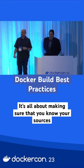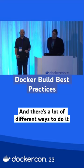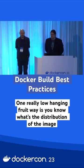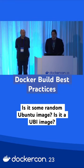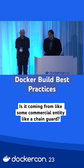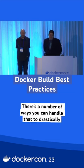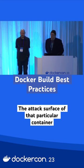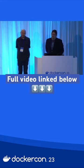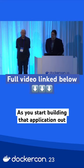It's all about making sure that you know your sources. There's a lot of different ways to do it. One really low-hanging fruit way is, what's the distribution of the image? Is it some random Ubuntu image? Is it a UBI image? Is it coming from some commercial entity like Chainguard? There's a number of ways you can handle that to drastically limit the attack surface of that particular container, and it just puts you in an overall better posture as you start building that application out.